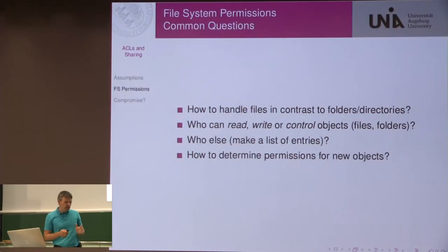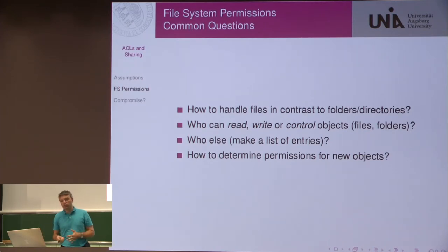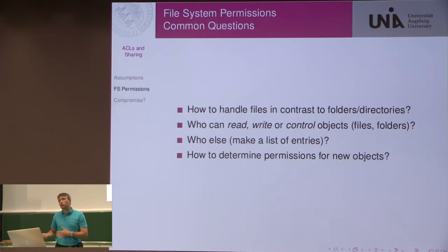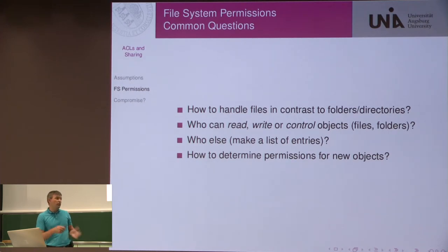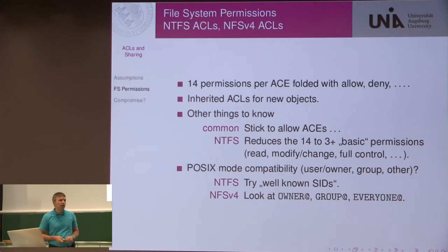If you look at a system of access control, you typically have to answer a few similar questions. One is how do you handle files in contrast to directories — directories are typically used to organize files. Who can read, write, or have anything else as permissions, like control them, do reshare, or something like that. Who else could have permissions on these entities, and how to determine permissions for new objects. All of the systems I mentioned have found some sort of answer to this, and the tables in the slides will give you a few hints for all four systems.